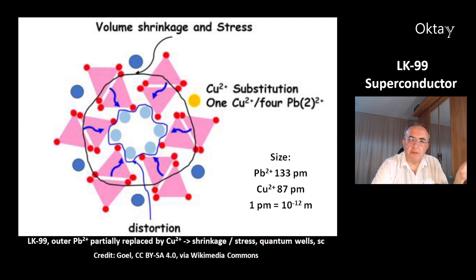This is another picture of the structure of LK-99. You can see the copper ion substitution happens only with the outer lead ions. Here you can see the different sizes of the copper and the lead ions. This replacement causes shrinkage and stress in the material. It produces quantum wells, and this gives LK-99 its superconductive properties, according to the scientists.